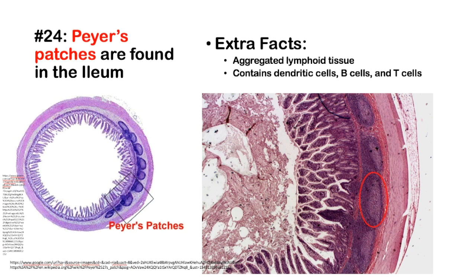Number 24: Peyer's patches are found in the ileum. This lymphoid aggregate of tissue is particularly high yield to know — they are found in the ileum and contain dendritic cells, B cells, and T cells. Specifically, they're found in the lamina propria and the ileal submucosa.